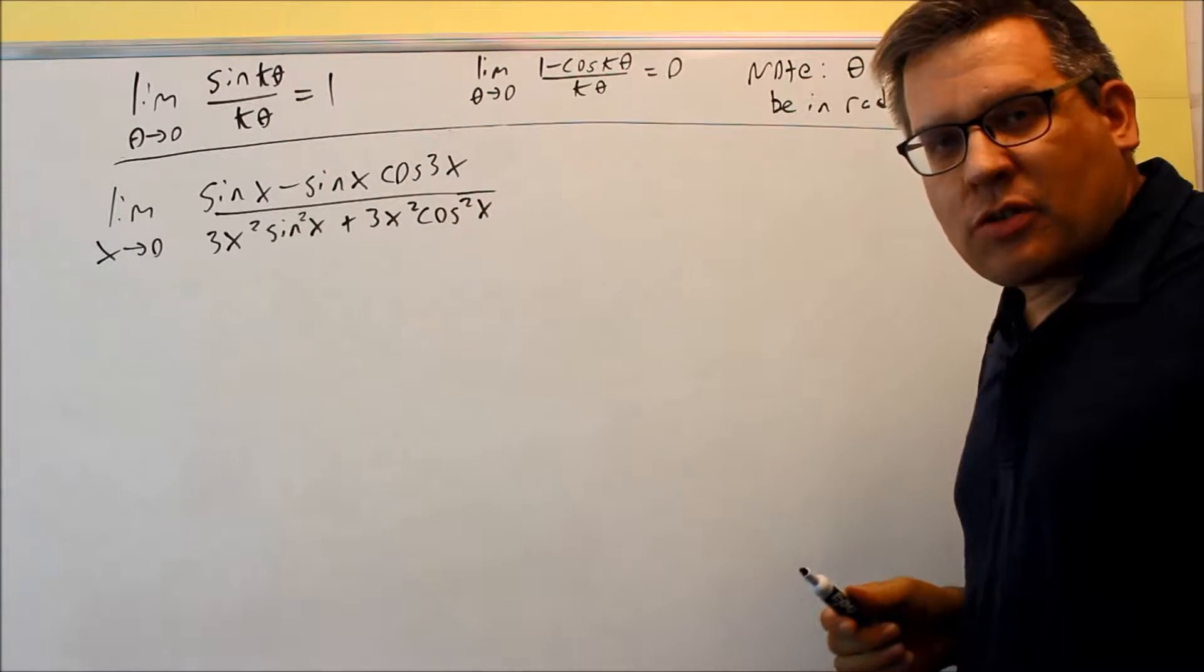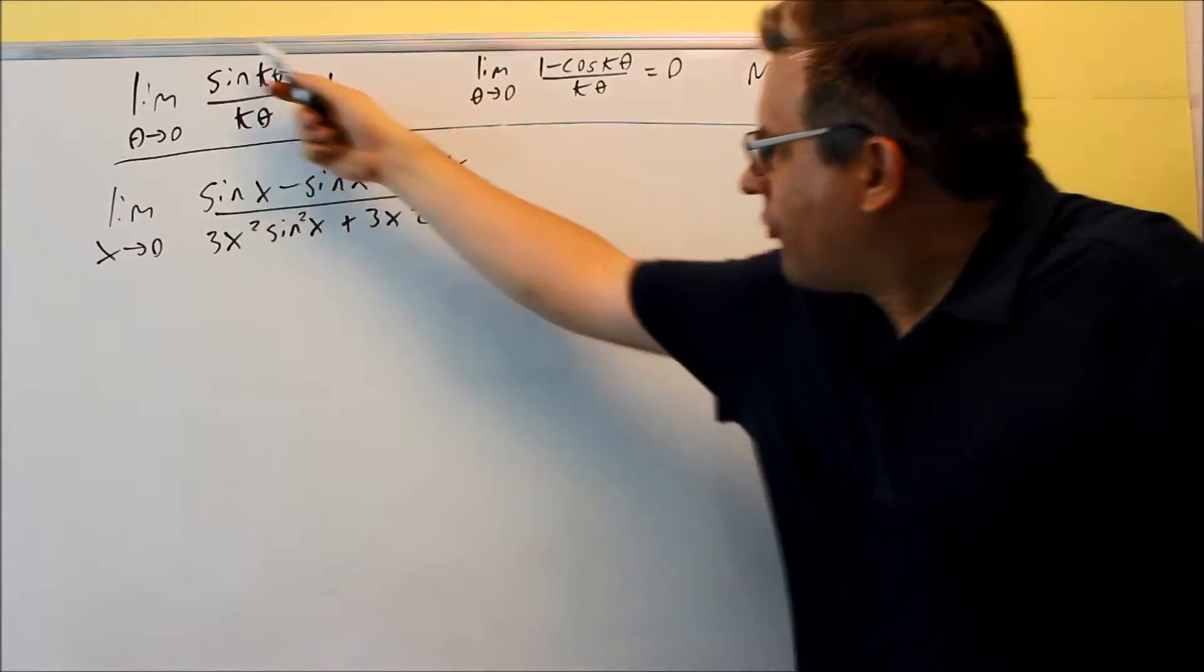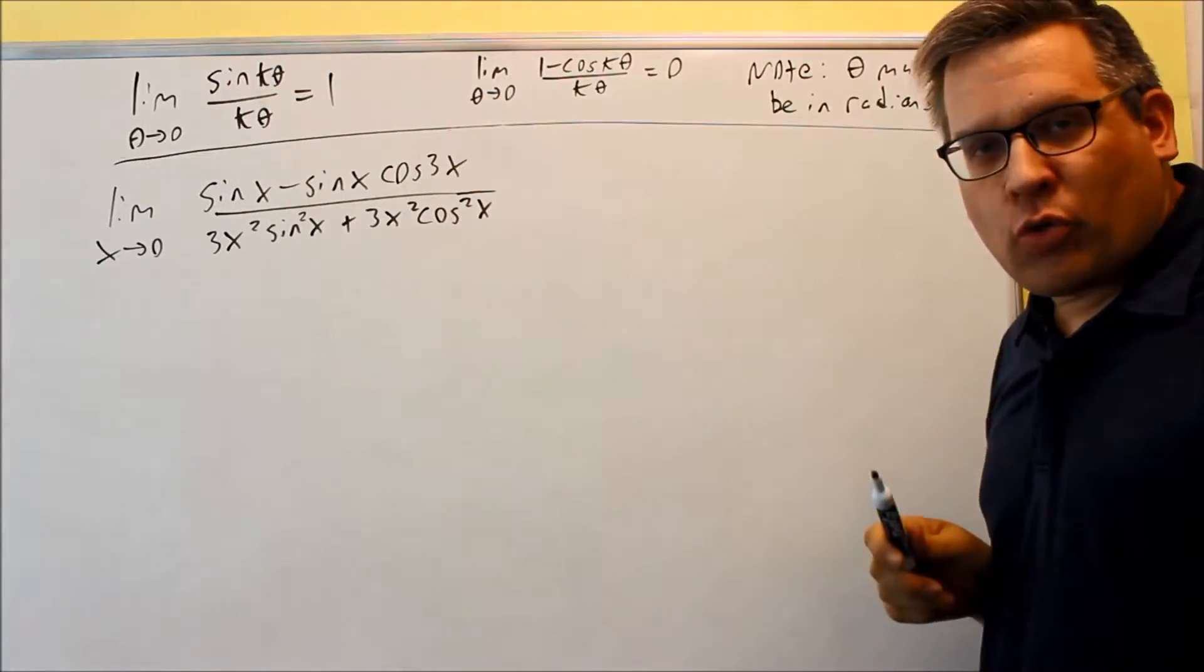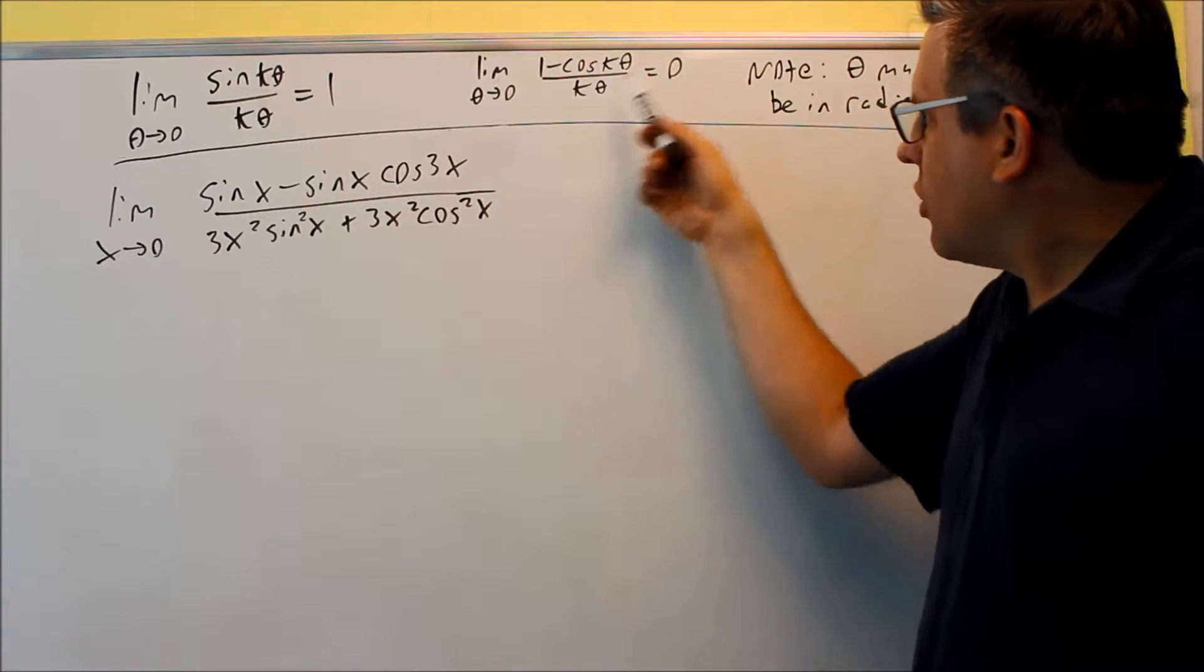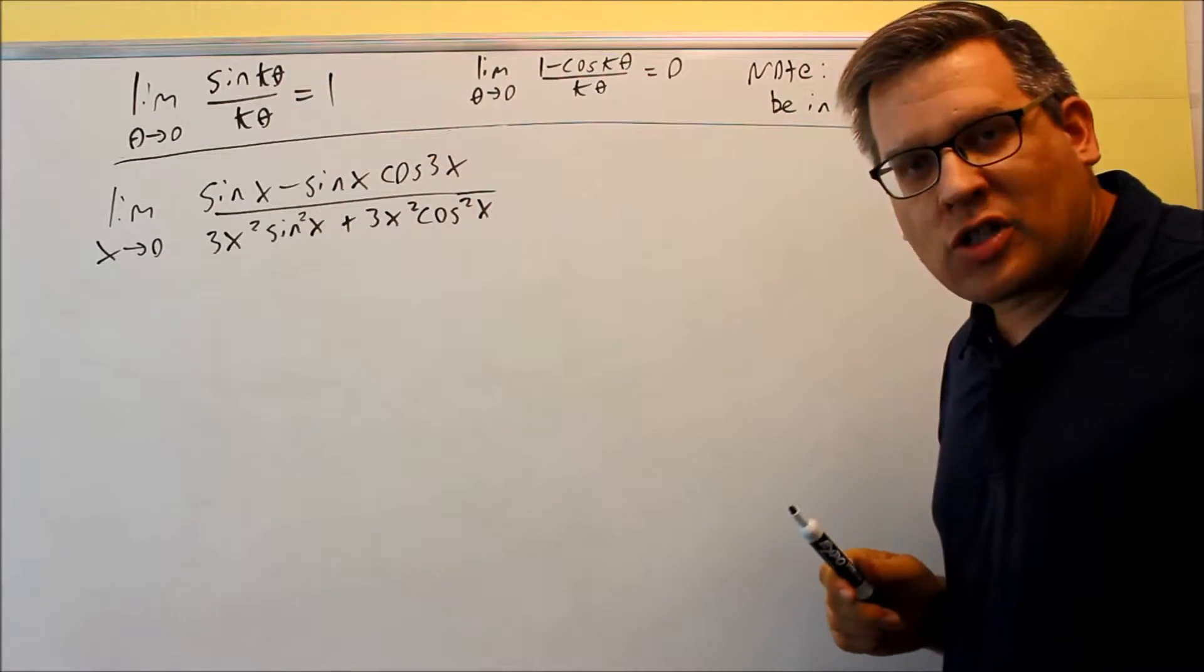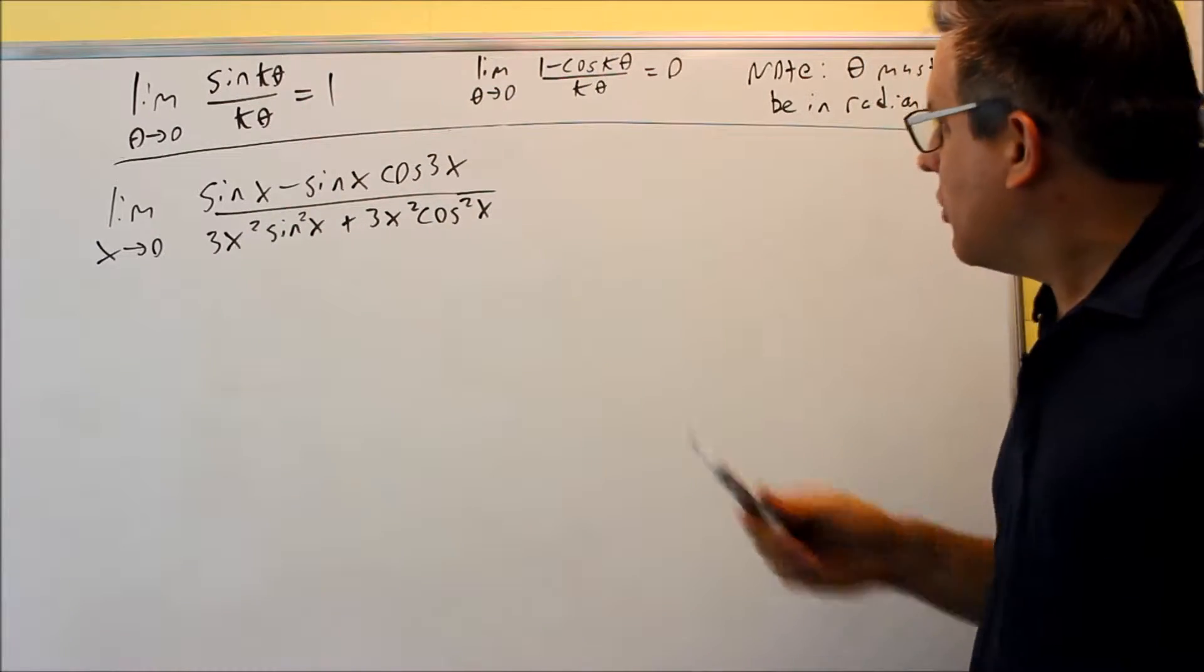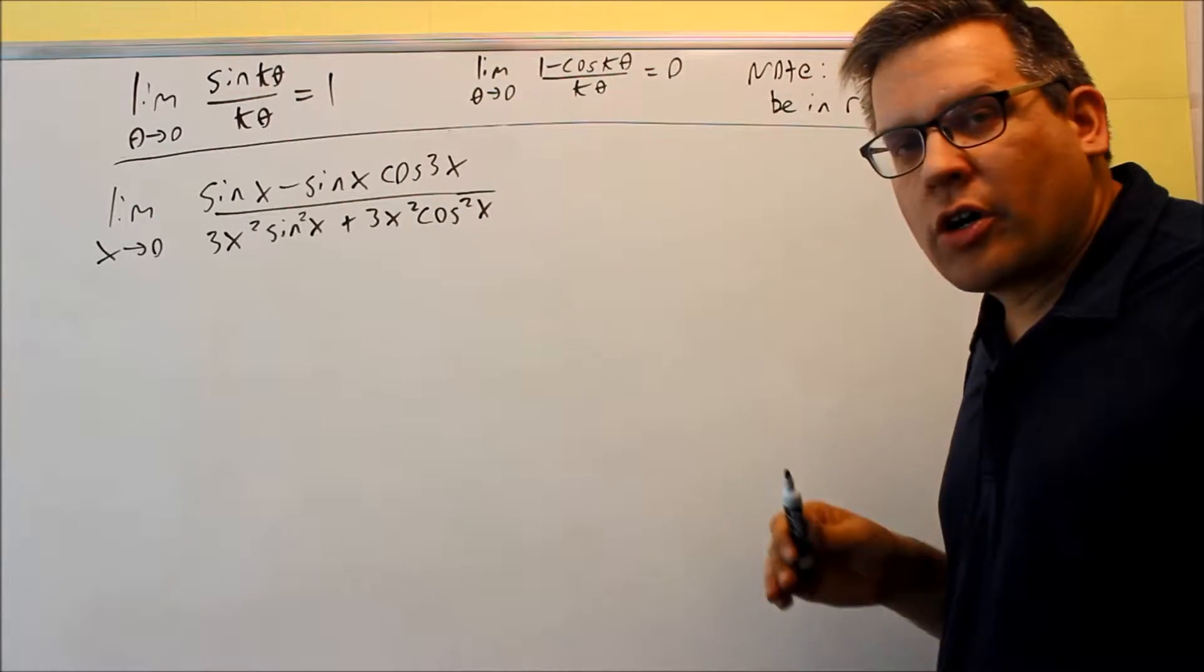Okay, these are the two properties that we've talked about so far in the previous videos. I failed to mention though that the first one, your theta has to be in radians also. So not only does this one have to be in radians in order for it to work, this first one also has to be in radians. So both the ones that involve these sine and cosine functions, theta must be in radians in order for these to work.